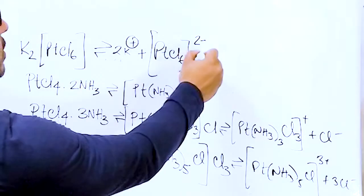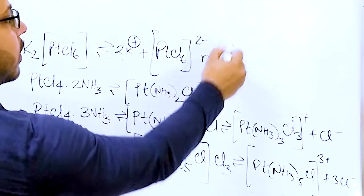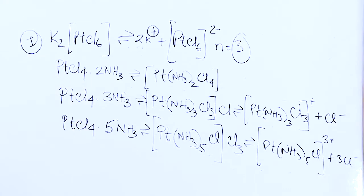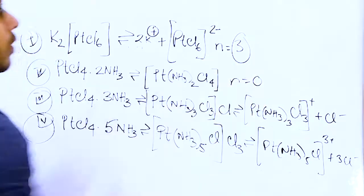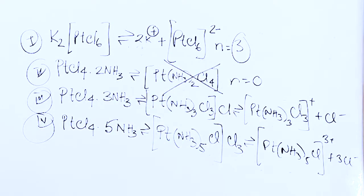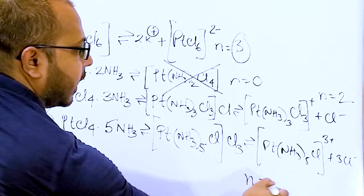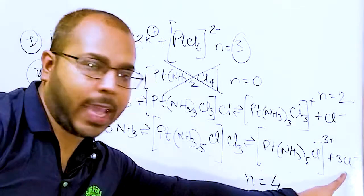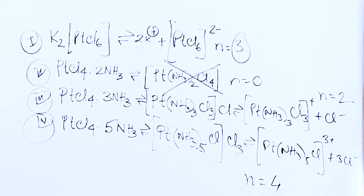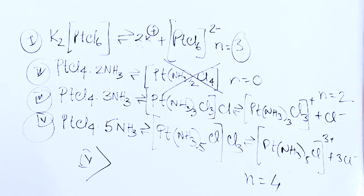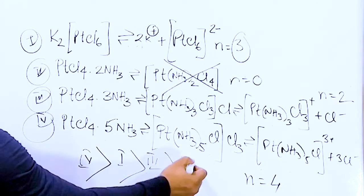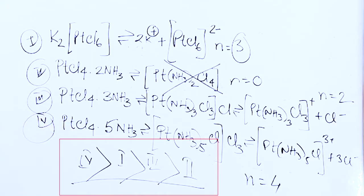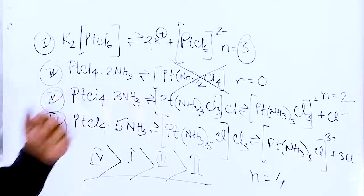So the number of ions: K2PtCl6 gives 3 ions, PtCl4·2NH3 gives 0 ions (no dissociation), PtCl4·3NH3 gives 2 ions, and PtCl4·5NH3 gives 4 ions (3 anions + 1 cation). The conductivity order would be: compound 4 > compound 1 > compound 3 > compound 2.